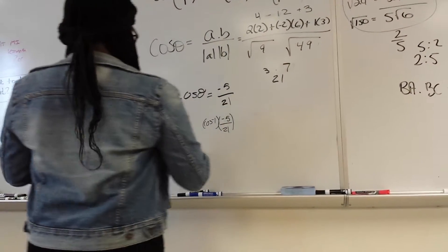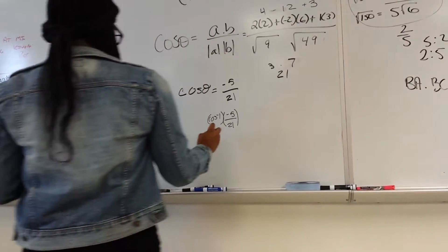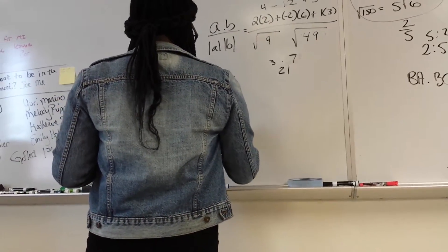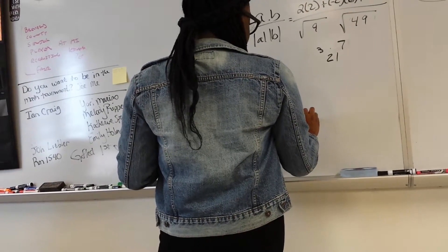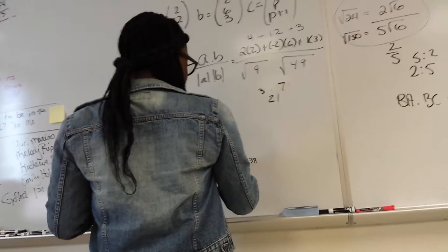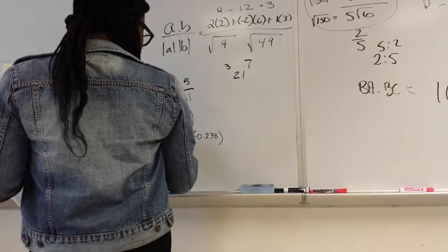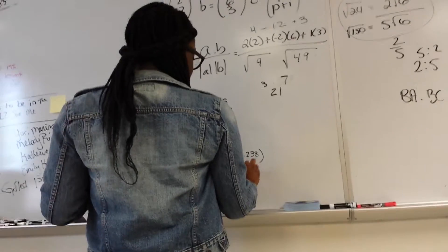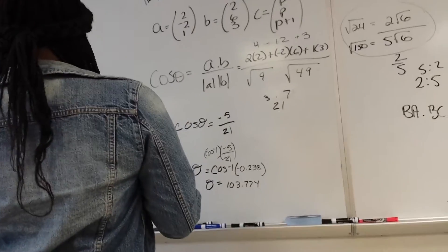So, what's the fraction of negative 5 over 21? Negative 0.238. So, cosine inverse equals cosine inverse. Parenthesis of 0.238. Can't you just put the fraction in there? I think so. And then what's theta? 103 point 7. 103 point 7. Okay. So, what do you think? Not bad? I got 103 point. You were close. Close.